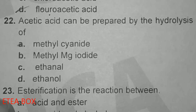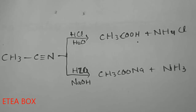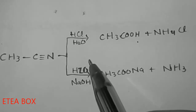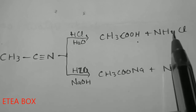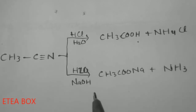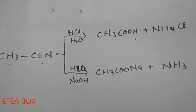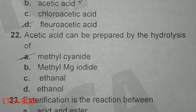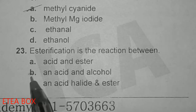Acetic acid can be prepared by hydrolysis of methyl cyanide — option A is correct. When we do the hydrolysis of methyl cyanide, in the presence of HCl it gives carboxylic acid plus NH₄Cl, while in the presence of NaOH it gives sodium acetate plus NH₃. So acetic acid can be prepared by hydrolysis of methyl cyanide.